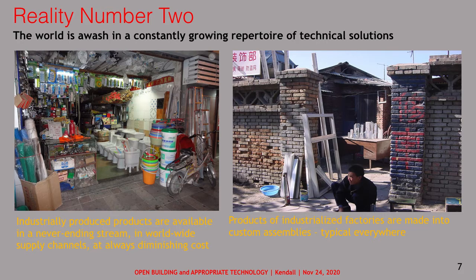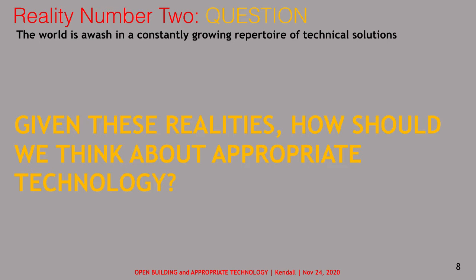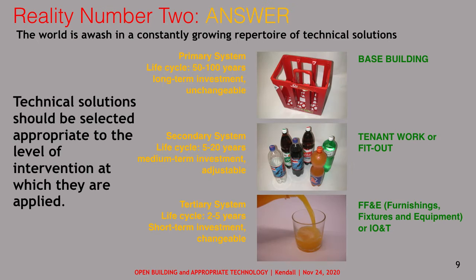Reality number two: the world is awash in a constantly growing repertoire of technical solutions. Industrially produced products are available in a never-ending stream in worldwide supply channels at always diminishing cost. Products of industrialized factories are made into custom assemblies — a typical process observable everywhere in the world. Given these realities, how should we think about appropriate technology? Open building has a potential answer: technical solutions should be selected appropriate to the level of intervention at which they are applied, introducing a three-level model — base building, fit-out, and FF&E, or primary, secondary, and tertiary systems.